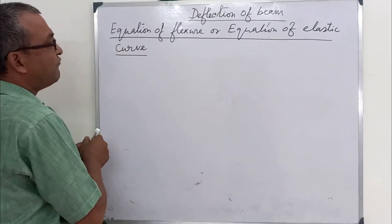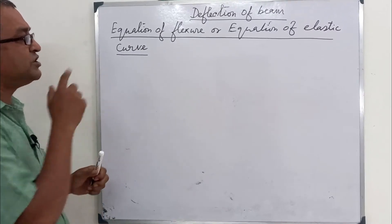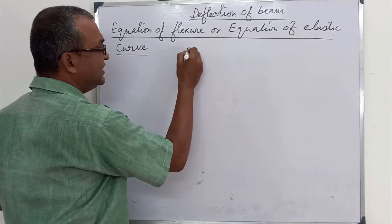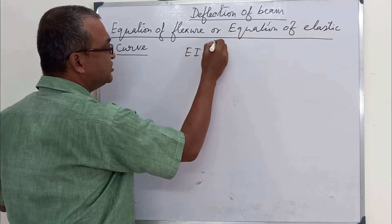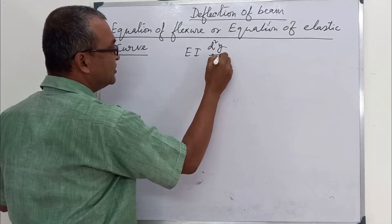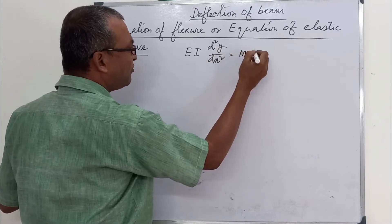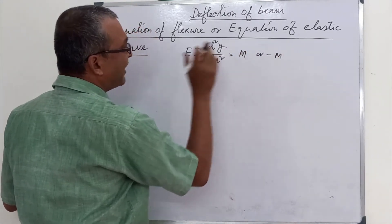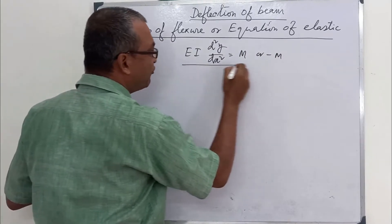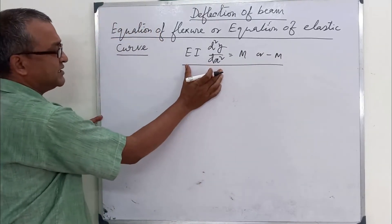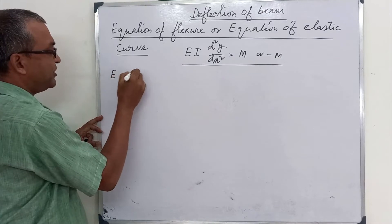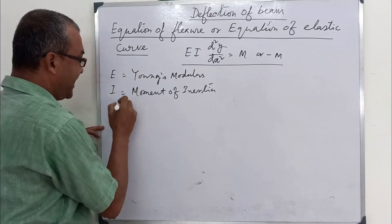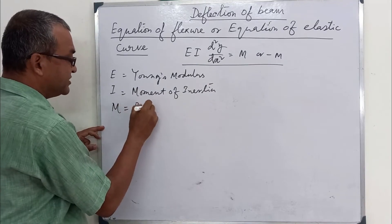The equation of flexure and the equation of elastic curve. We have written the equation: EI d²y/dx² equals M. Here, E stands for Young's modulus, I is the moment of inertia, and M is the bending moment.